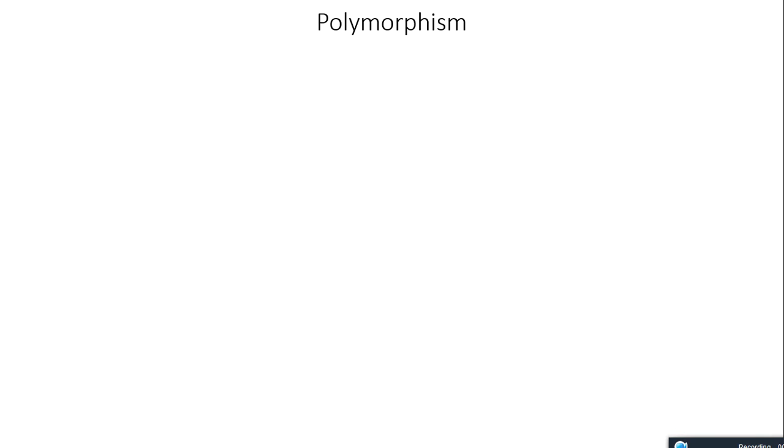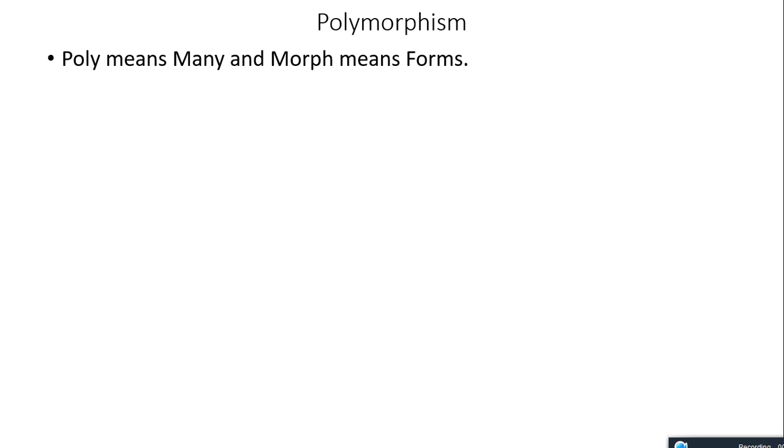What is polymorphism? Creating more than one function, more than one operator, or in short creating more than one type of function with the same name and different type of argument list is called polymorphism. Generally, polymorphism means change in behavior, or the same person showing different types of behavior. Poly means many and morph means forms — many forms of the same name.